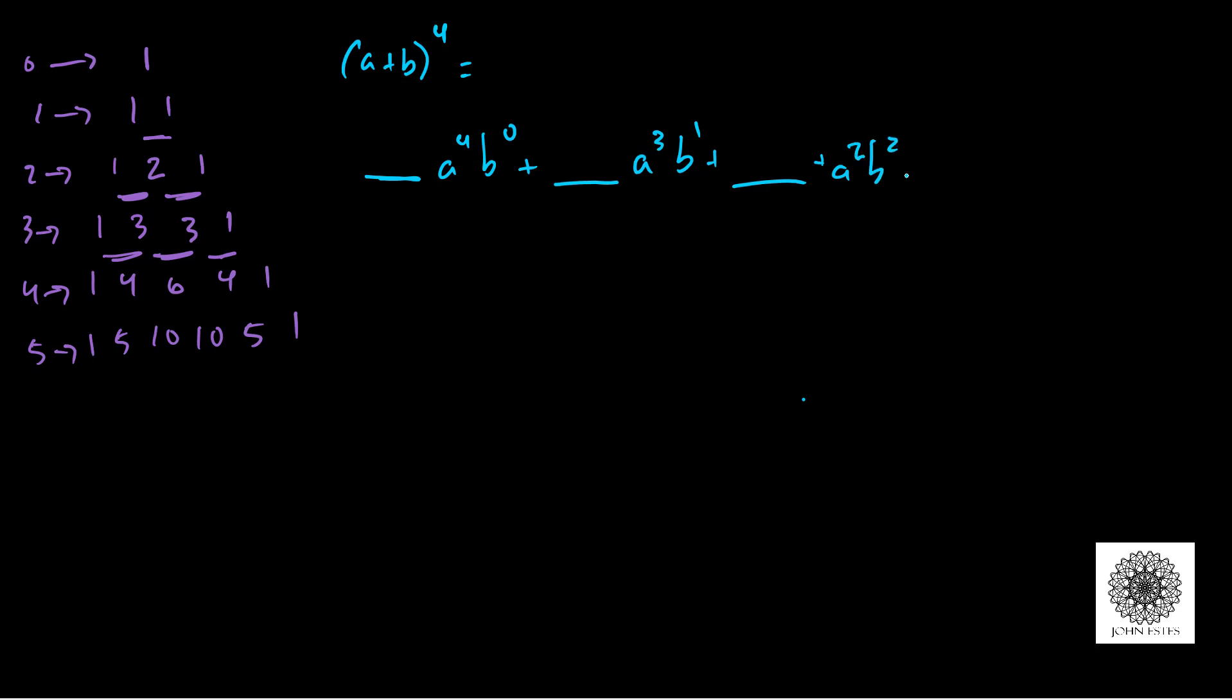If you notice, the exponents of a are marching down, the exponents on b are marching up, and if you add the two exponents together you have 4. So the next one will be a to the first, b cubed, and lastly a to the zero, b to the fourth.